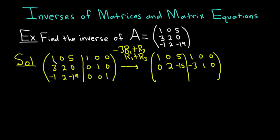Adding row 1 to row 3: 1 plus negative 1 is 0. 0 plus 2 is 2. 5 plus negative 19 is negative 14. 1 plus 0 is 1. 0 plus 0 is 0. 0 plus 1 is 1. So the third row becomes 0, 2, negative 14, 1, 0, 1.